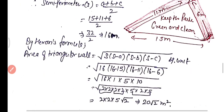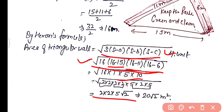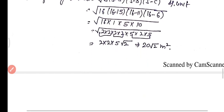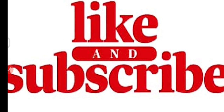Using Heron's Formula: √(s(s−a)(s−b)(s−c)). Putting all the values: √(16 × (16−15) × (16−11) × (16−6)) = √(16 × 1 × 5 × 10). After simplifying, the area is 20√2 m². This is all about worksheet number 38. If you learned from this video, please subscribe to my channel and share this video. Thanks for watching.